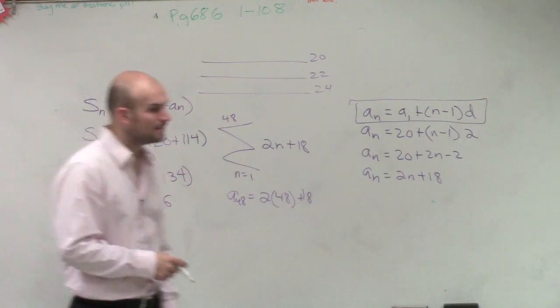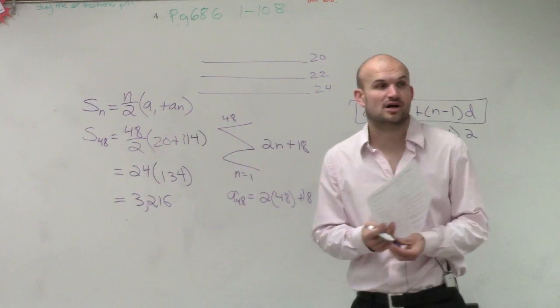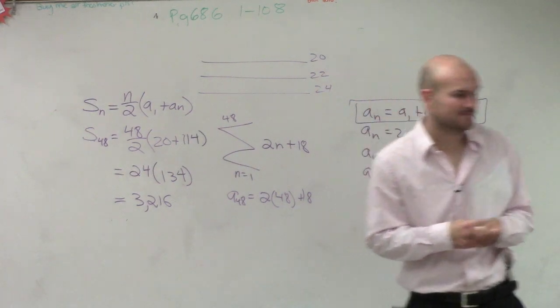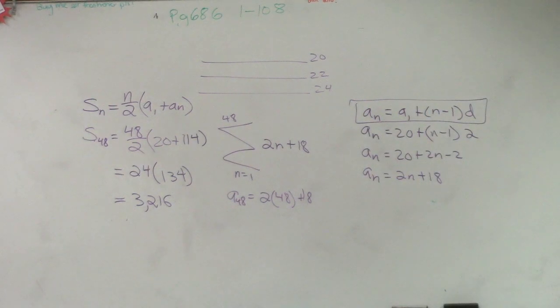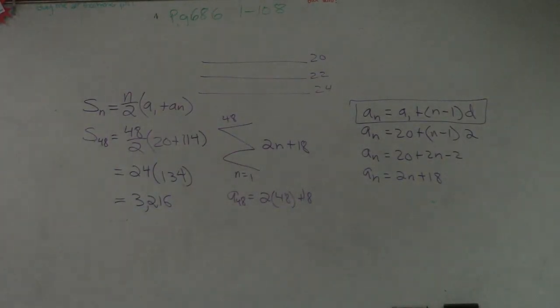So there you go. That is the sum of the number of rows, 48 rows as long as it keeps on increasing by 2. Don't want to really worry so much about a problem like that. Obviously, if we had more time, I would have...